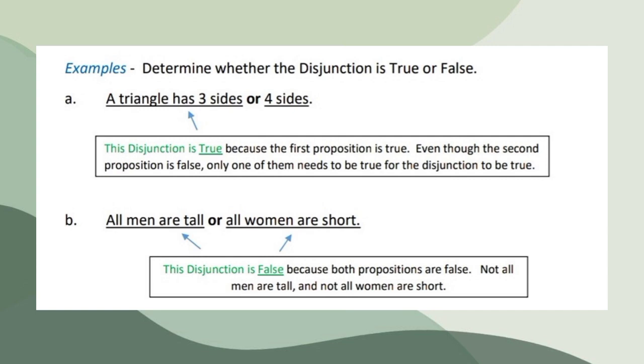So let's have an example for disjunction. Let's determine whether the disjunction is true or false. Number one, a triangle has three sides or four sides. This disjunction is true because the first proposition is true. Even though the second proposition is false, only one of them needs to be true for the disjunction to be true.